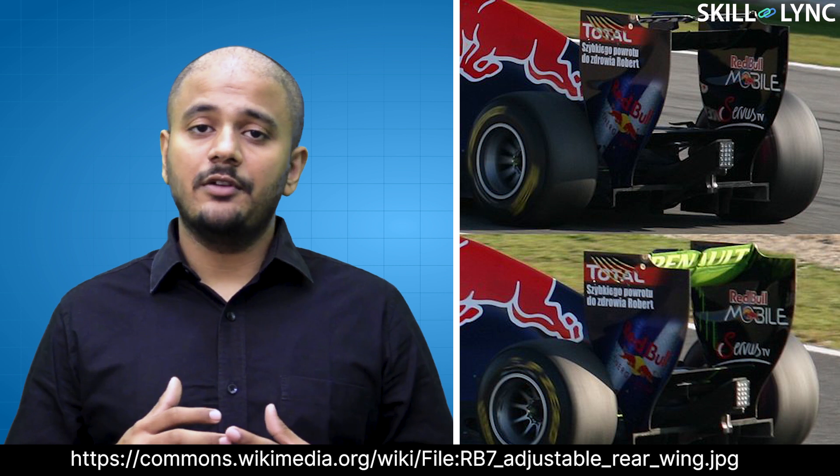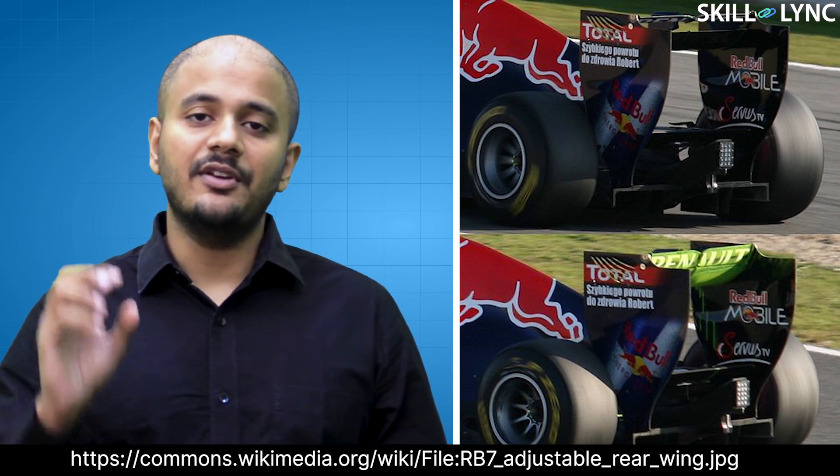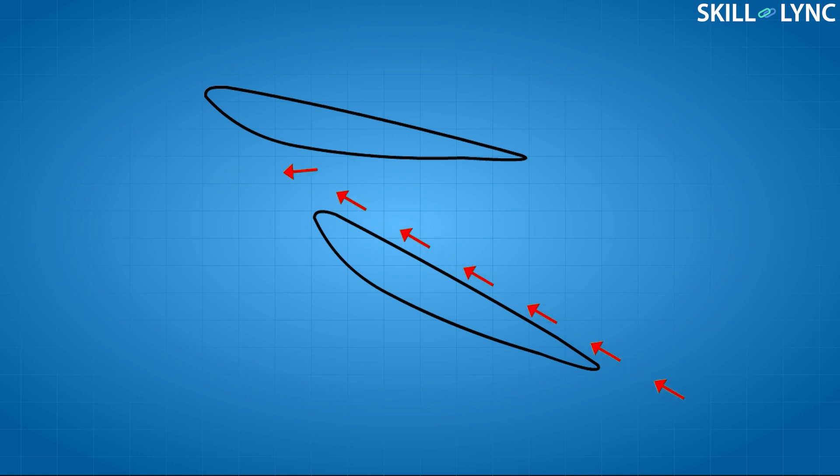DRS is a bodywork which has an adjustable rear wing that moves in response to the driver's command. The rear wing of the car consists of a main plate and an adjustable flap. This flap is capable of being lifted to a maximum height of 50 millimeters.